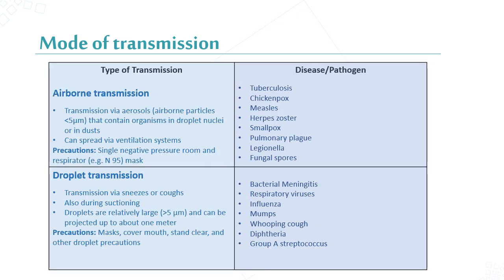For airborne transmission, transmission occurs via aerosol — airborne particles less than 5 microns that contain organisms in droplet nuclei or dust, which can spread via the ventilation system. The precautions taken for airborne transmission are: place the patient in a single negative pressure room and wear an N95 mask. Examples of airborne diseases include chickenpox, measles, and Legionella.